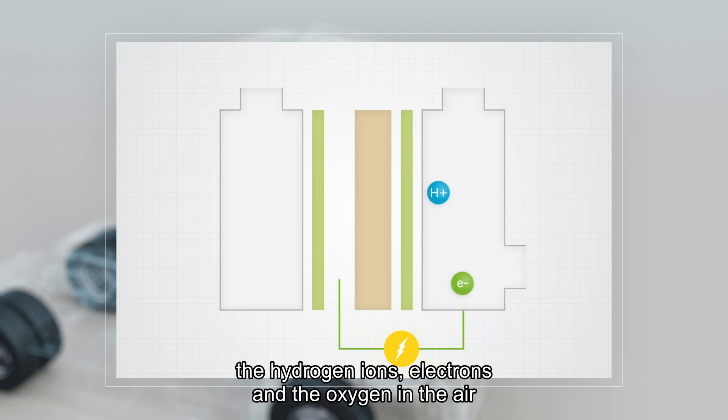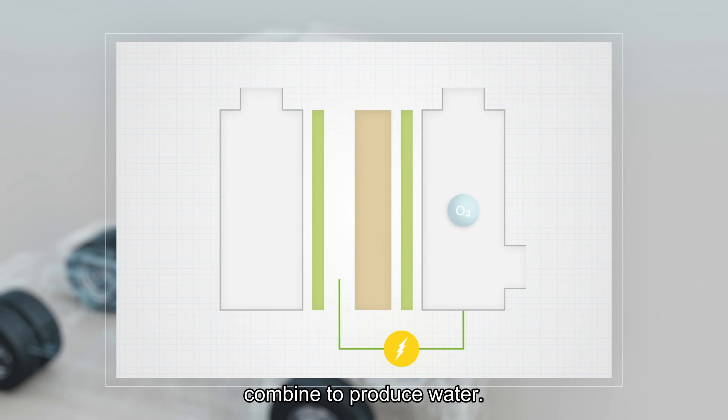At the cathode side, the hydrogen ions, electrons, and the oxygen in the air combine to produce water.